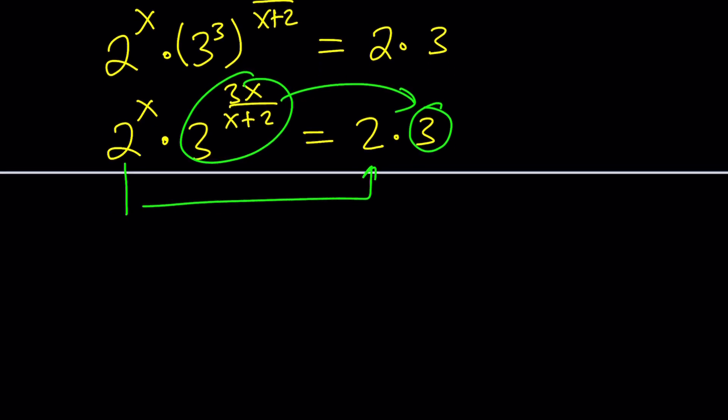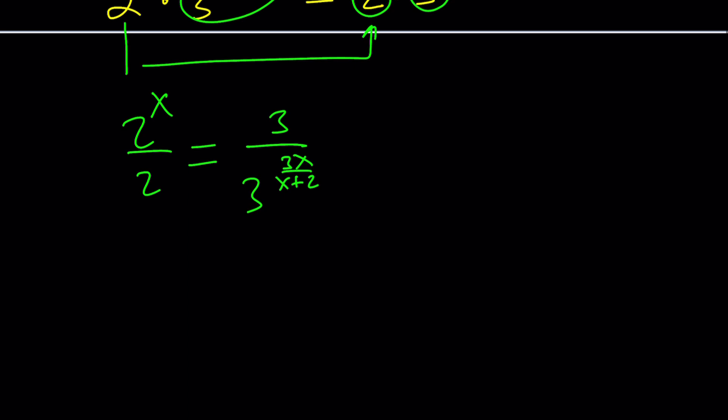First, I'll take it from here. I'll divide both sides by 2. That'll give me 2^x divided by 2. And I'll divide the 3 by 3^(3x/(x+2)). So in other words, I'm going to put the 2s on one side and then 3s on the other side. Left-hand side and right-hand side. And again, properties of exponents help us here.